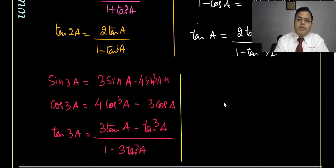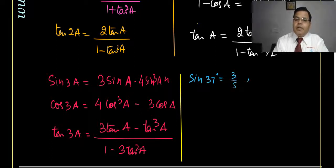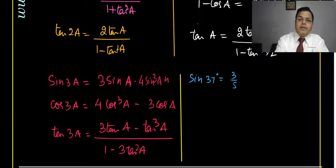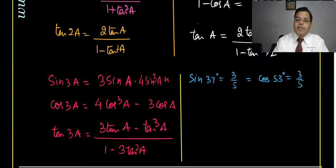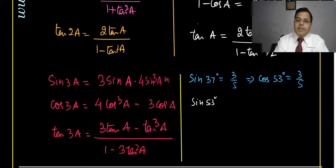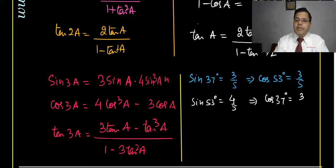The triple angle formulas: sin 3A equals 3 sin A minus 4 sin cubed A; cos 3A equals 4 cos cubed A minus 3 cos A; tan 3A equals (3 tan A minus tan cubed A) upon (1 minus 3 tan squared A). Also important: sin 37° is approximately 3/5, which equals cos 53°. And sin 53° equals 4/5, which equals cos 37°.